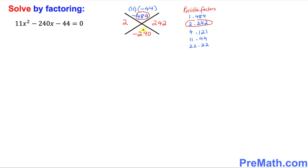Now let's fix the sign. Since this is negative 240, this is going to be a negative sign and this is going to be a plus sign. So positive 2 and negative 242 are our factors. If you add them you get negative 240, and if you multiply them you get negative 484.